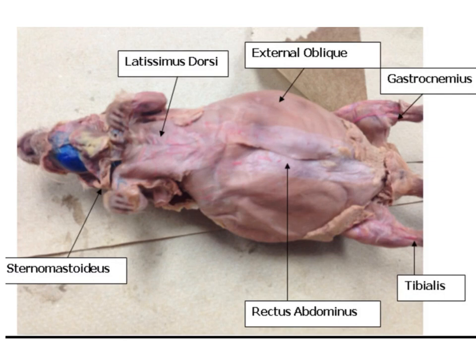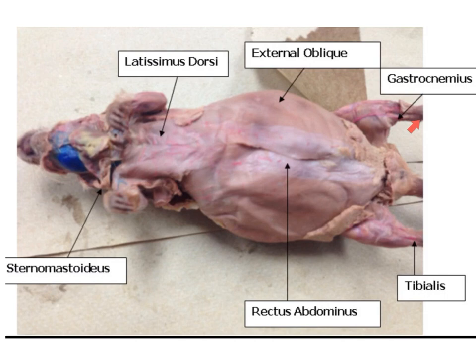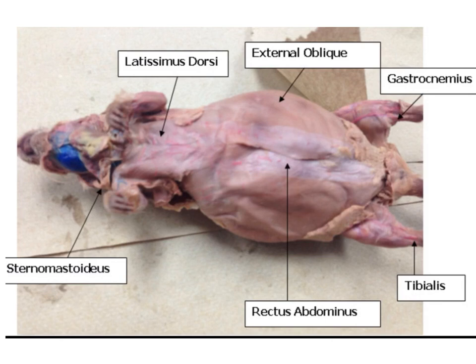As we begin the muscular system, know that all muscles are attached to at least two structures, usually bone. When the muscle contracts, one attachment point moves — that is the insertion — while the stationary point is the origin. We'll begin with the gastrocnemius, the main calf muscle, which is attached via the Achilles tendon to the tarsals. Above that is the tibialis anterior, which lays on top of the tibia; the tibia is the insertion and a tarsal or metatarsal is its origin, allowing it to flex the foot.